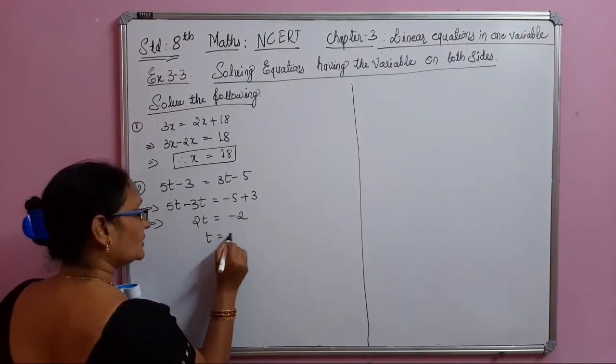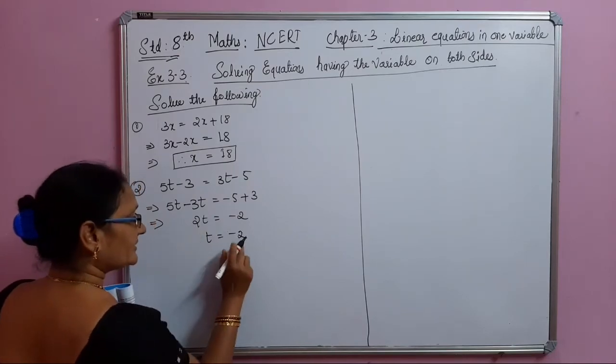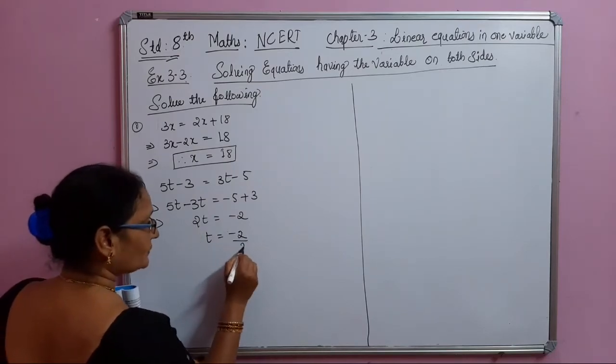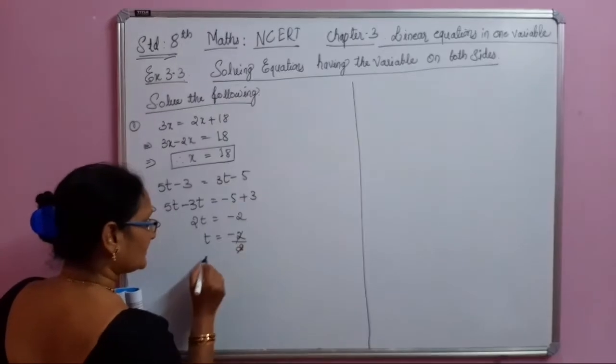5t minus 3t is 2t equals minus 5 plus 3, which is minus 2. So t equals minus 2 divided by 2, therefore t equals minus 1.